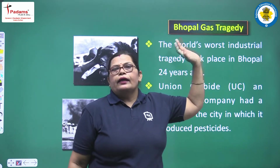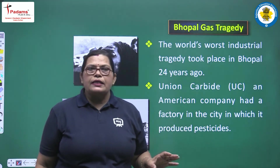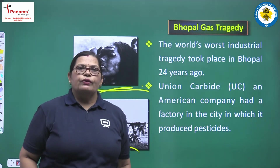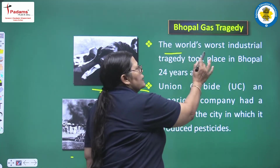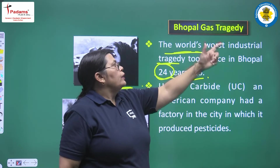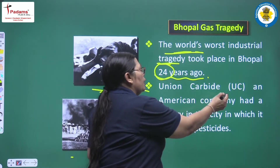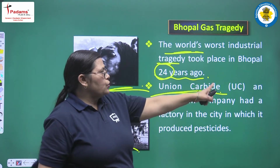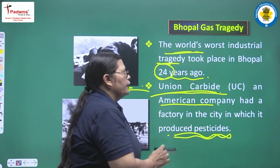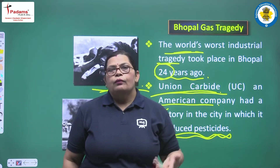When we are taking the Bhopal Gas Tragedy in this chapter — every incident of it. These are some pictures of that tragedy. The world's worst industrial tragedy took place in Bhopal 24 years ago — not only for India but for world industries. Union Carbide, an American company, had a factory in the city in which it produced pesticides. The tragedy took place in this company.